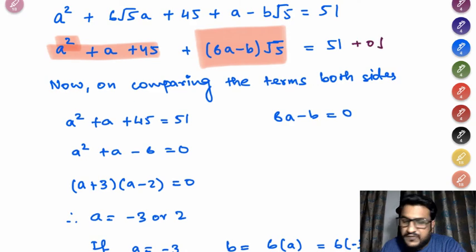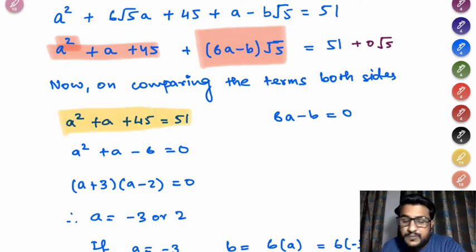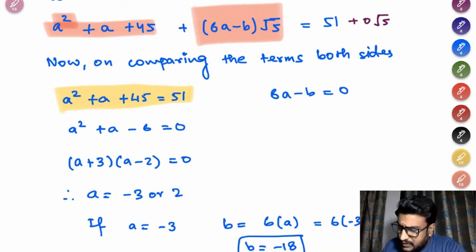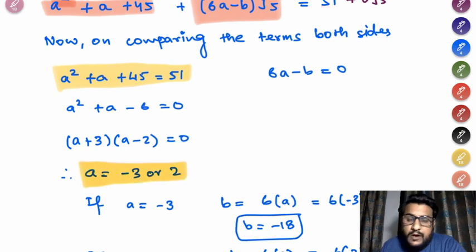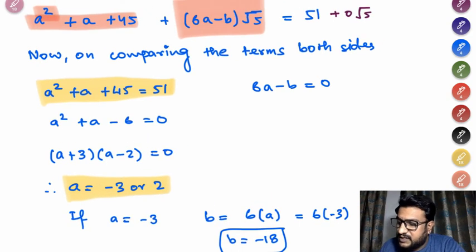Now if you compare the left hand side and right hand side I can easily write down this as 51 plus 0√5, it's one and the same thing. Now comparing the constant terms together so I'll get a² plus a plus 45 should be equals to 51. Simplifying this will give me a quadratic equation which I can factorize and easily simplify, so I'll get two values of a that is -3 or 2.